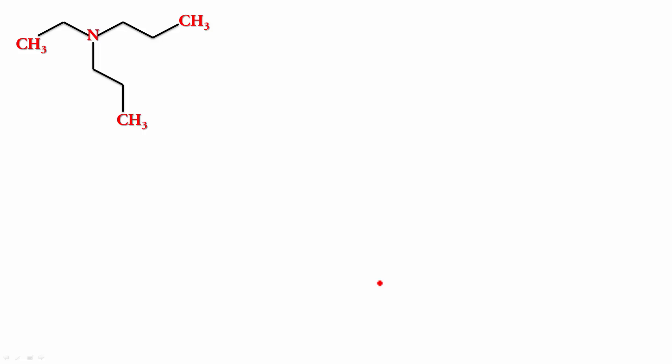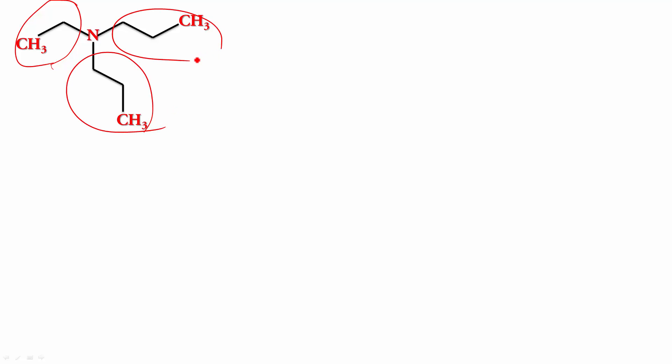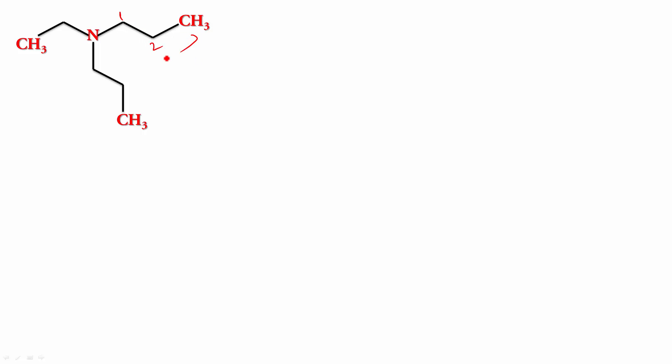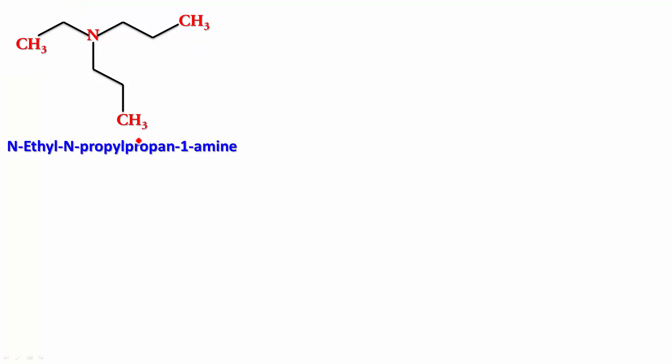Let's check out a few more examples. What are we going to call this one? Well, I could write N-ethyl, N-propyl, N-propyl amine — or N-ethyl, N,N-dipropyl amine — but I'm going to use one of them as parent. The parent is the propyl chain: one, two, three. So it's N-ethyl, N-propyl, propan-1-amine.